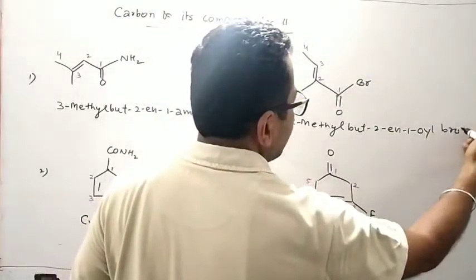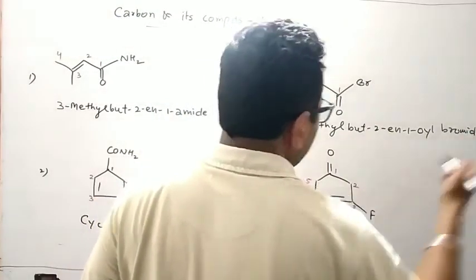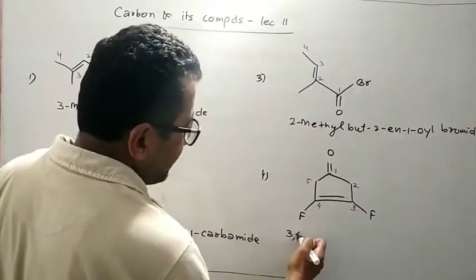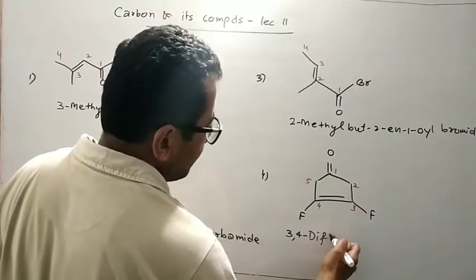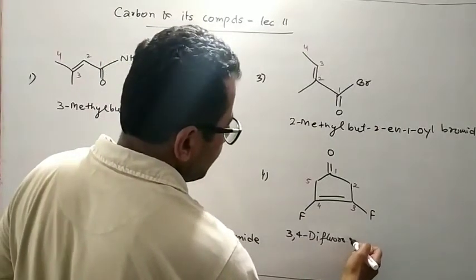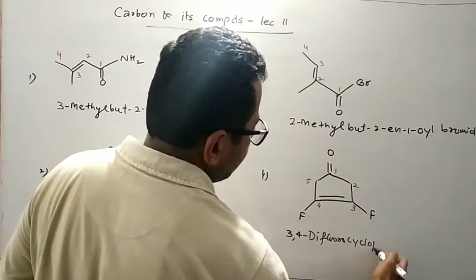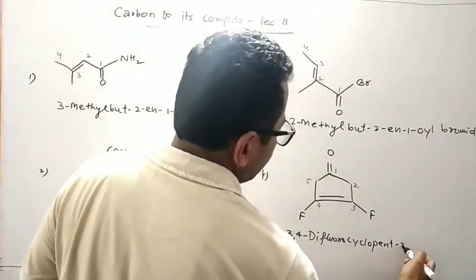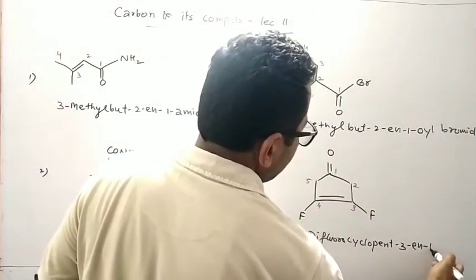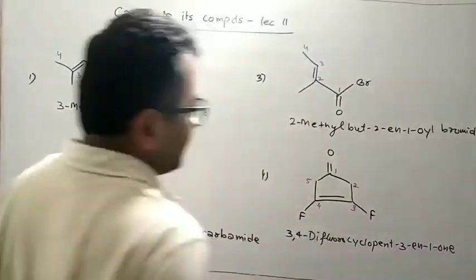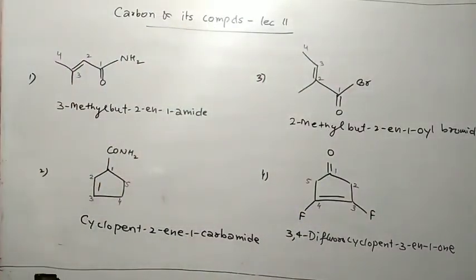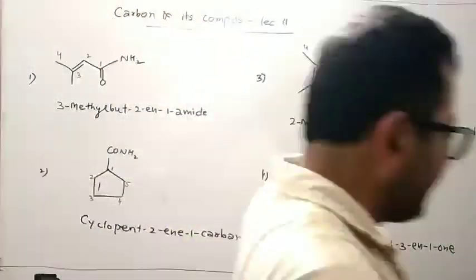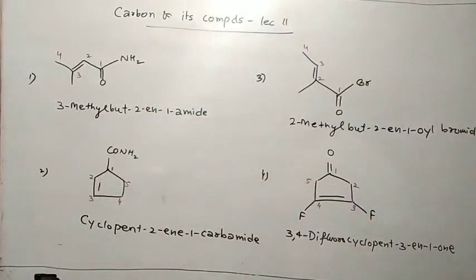And this is 3,4-difluorocyclopent-3-en-1-one. In this way we write the names of these compounds, especially amides, acid chlorides, and acid bromides. Thank you.